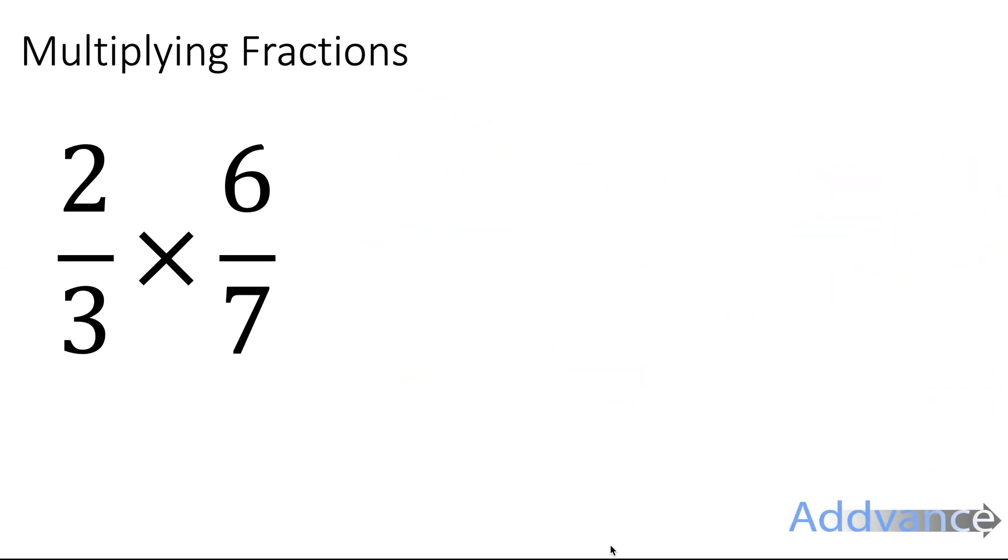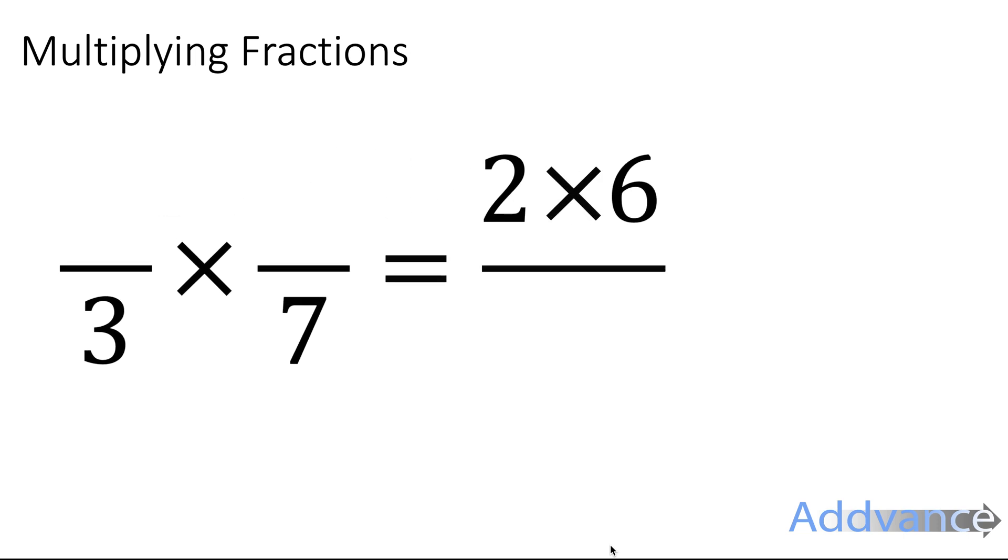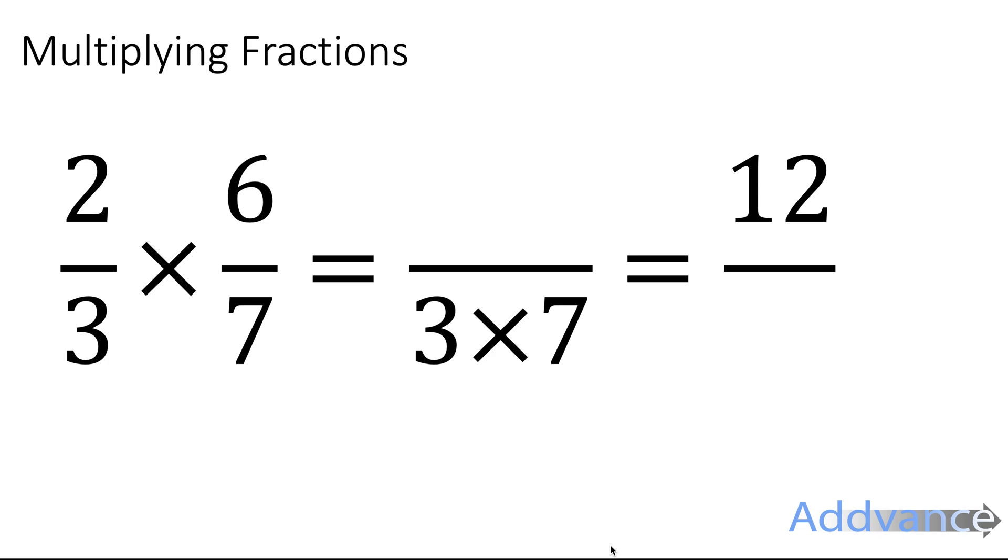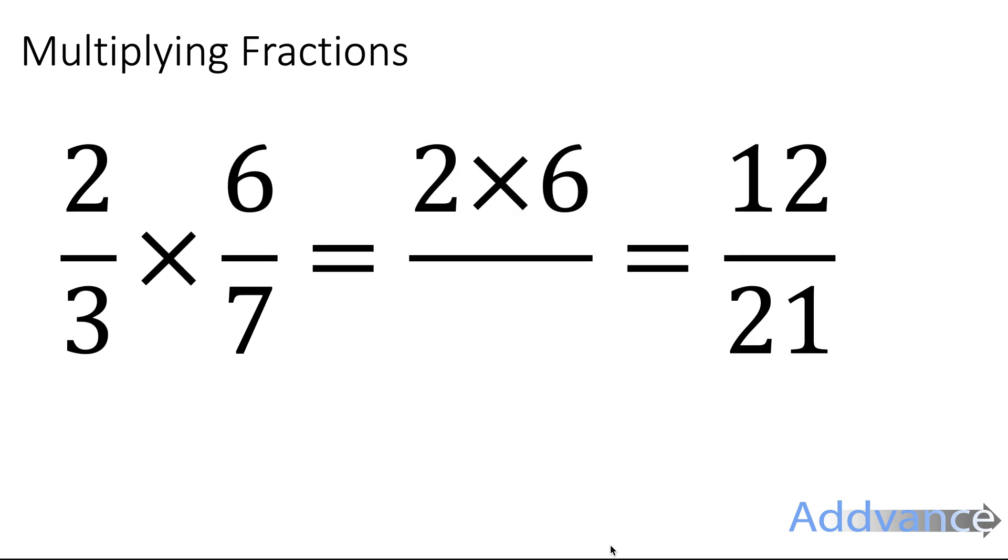Let's start with multiplying fractions. I've got an example here, 2 thirds times 6 sevenths. To multiply fractions we just multiply the top and multiply the bottom. 2 times 6 is like that and 3 times 7 like that. 2 times 6 will give us 12, 3 times 7 will give us 21.